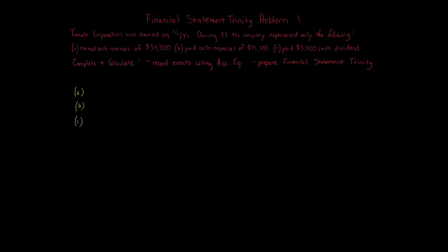This question is straightforward because we only have three transactions, but we still have a lot to do. The first thing is to record events using the accounting equation: assets equals liabilities plus equity. This is a corporation. The accounting equation approach I use is what I refer to as horizontal analysis. Understanding the accounting equation helps you better understand the financial statements, which is the purpose of taking financial accounting.